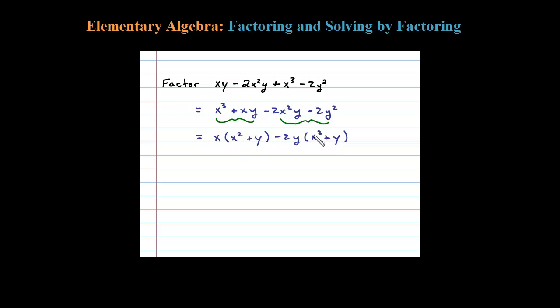Okay, so notice now we have what looks like a binomial with the quantity x squared plus y now as a GCF. So if we factor that out, what will be left? We can see here x minus 2y will be left. So there you have it, we factored it by grouping. First though, we had to rearrange the terms.